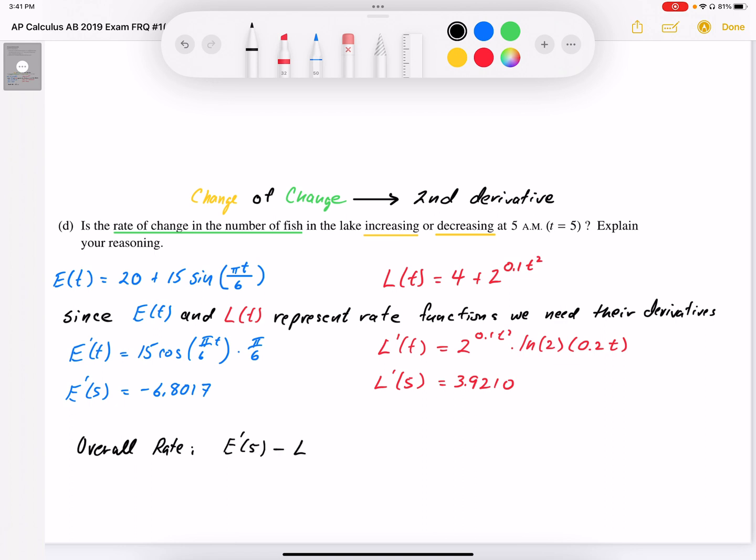minus the leaving rate, L' at 5. That's going to give me the overall rate, so negative 6.8017 minus 3.9210.